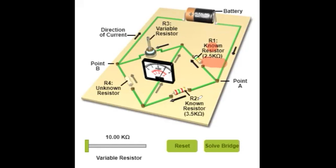The second resistance R2 is also a known resistance. We know its value is 3.5 kilo ohms. The third resistance R3 is known but it is a variable resistance — its resistance can be varied by rotating it. R1 and R2 are fixed, but R3 can be changed; it is a known but variable resistance.